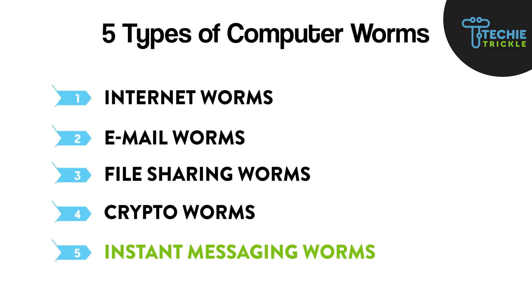The fourth type is crypto worms, which utilize strong encryption to gain access to a computer and can only be removed through cryptographic tools. They demand money in exchange for a key to decrypt your files, and during that process these worms are sharing and tampering with information stored on your computer.